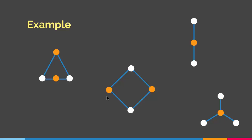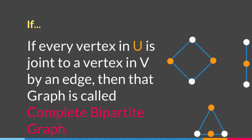Let's look at a couple of special cases. If every vertex in U is joined to every vertex in V by an edge, that graph is called a complete bipartite graph. As you can see, every orange vertex is connected to every white vertex by an edge.